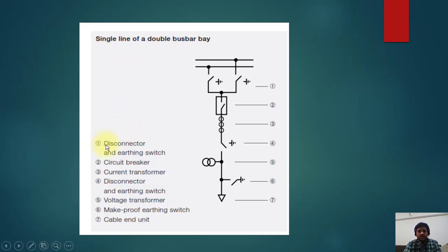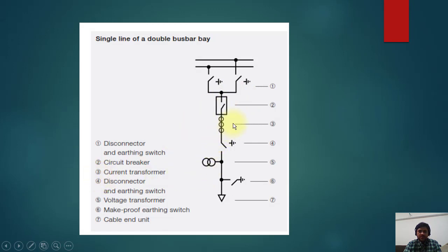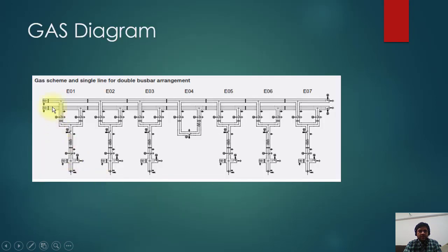Here you can see a single line diagram of the GIS. Number one is the symbol for a disconnector and earthing switch — this is a discrete earthing switch. Number two is a circuit breaker symbol. Number three is a current transformer symbol. Number four is again a disconnector and earthing switch — this is a line disconnector and a bus disconnector. Then we have a voltage transformer, a make-proof earthing switch, a high-speed earthing switch, and a cable. This is how you can represent GIS in a diagram.